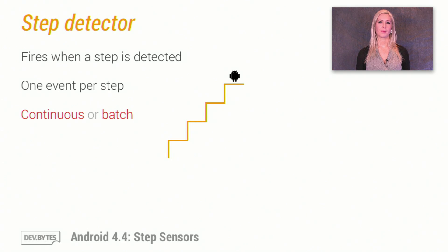Android has two sensors for step counting. The first is the step detector. It fires an event when a step is detected, one event per step. The only value it can return is one, so if you want to count steps, you have to do that yourself.